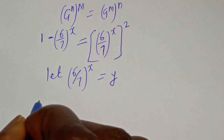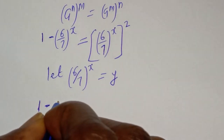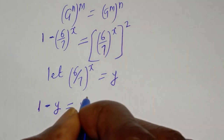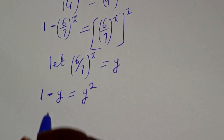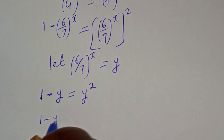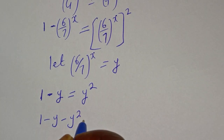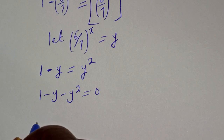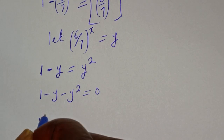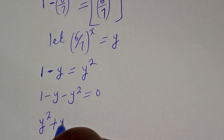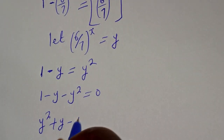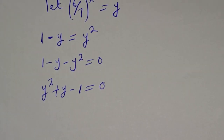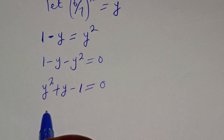Now this becomes 1 minus y is equal to y squared. Rearranging: 1 minus y minus y squared equals 0, or equivalently y squared plus y minus 1 is equal to 0. This is a quadratic equation.